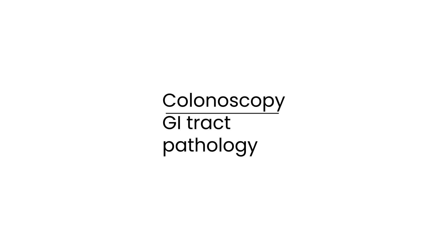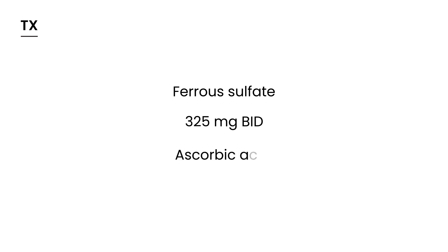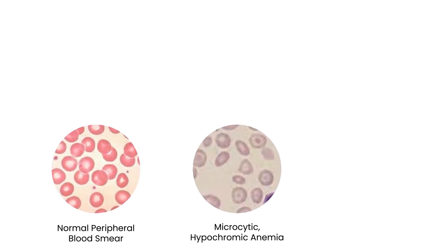The treatment is iron replacement. The prescription is most commonly ferrous sulfate 325 mg twice a day. Interestingly, ascorbic acid — either as a pill or in the form of orange juice — can help enhance iron absorption and can be beneficial.